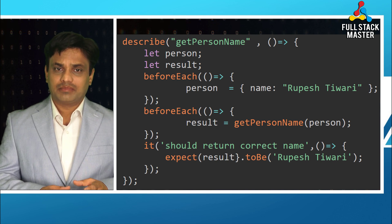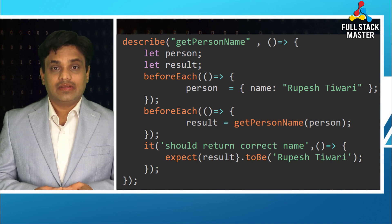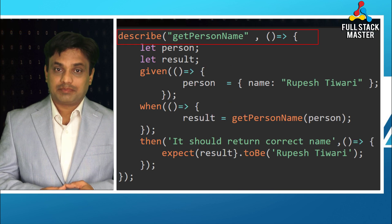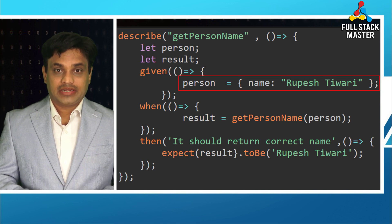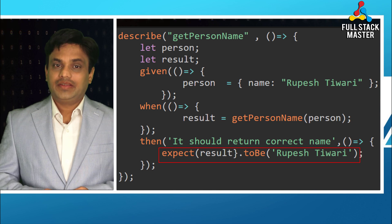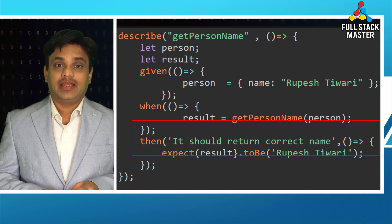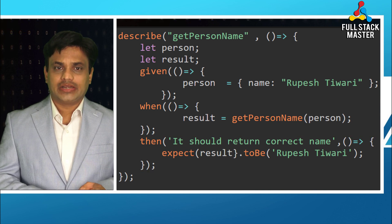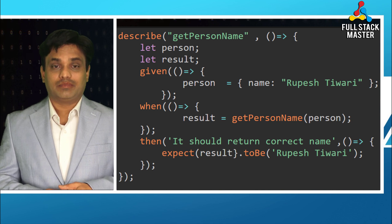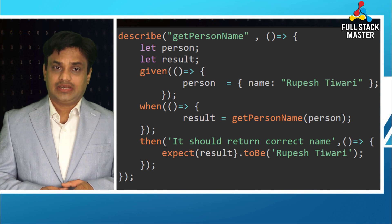Let's see if we can make it more readable and explicit by using given-when-then. I want to write the same test in given-when-then fashion, and it will look like this: first describe getPersonName, then 'given there is a person object', 'when I call getPersonName by passing the person object', 'then I get the correct name'. If you read this test, you will know that given is the Arrange part, when is the Act part, and then is the Assert part — giving a clean separation while reading your unit test code.